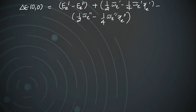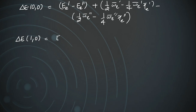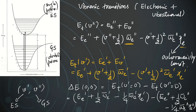This is the energy difference for the (0,0) transition. Similarly, we find ΔE for the (1,0) transition — going from v″=0 to v′=1. Substituting v′=1 (so v+1/2 = 3/2): we get E_e′ plus (3/2)ω̄_e′ minus (9/4)ω̄_e′ψ_e′, minus the same ground state zero-point energy terms.